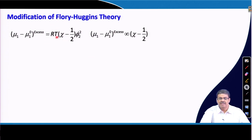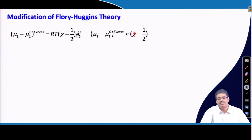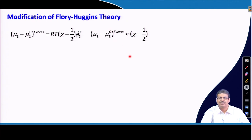This is what we get from Flory-Huggins theory. As explained, this may not accurately predict solubility behavior, but it is proportional to the excess term for many polymer-solvent systems. This means again that if we decrease chi, the polymer-solvent interaction parameter, the solubility of the polymer in that particular solvent increases. We can equate this term using the modified Flory-Huggins theory, where this is the entropic term.